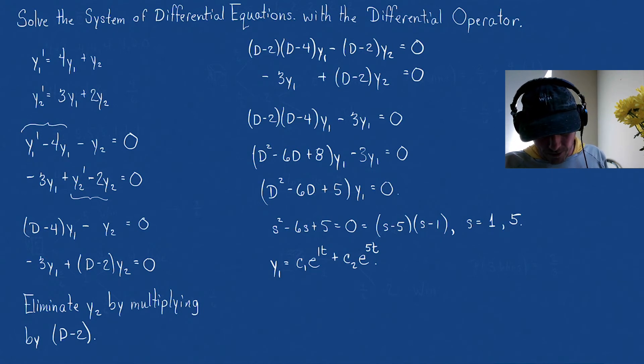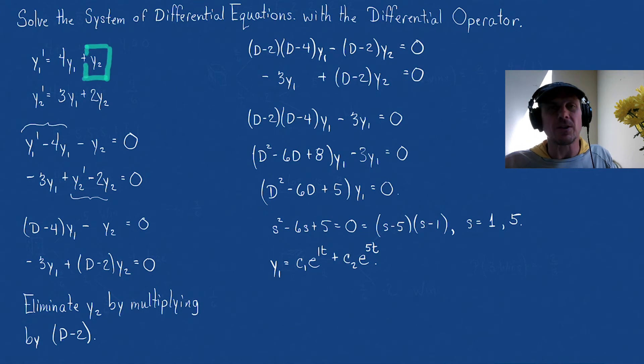Now, here's where it gets more interesting. Now notice this. If I solve, I have y1, and I want to solve for y2. Well, if I use this first equation, y2 is very easy to find. I would just have to subtract the 4y1 and plug in my values, and I would have my solution.